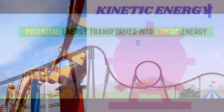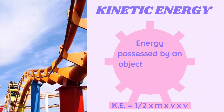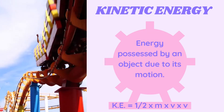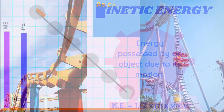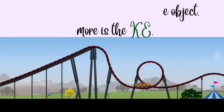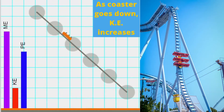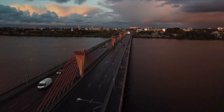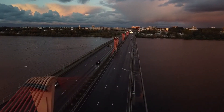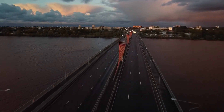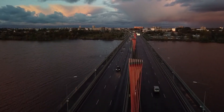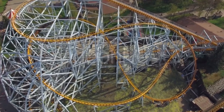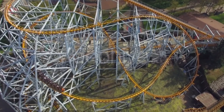That stored potential energy now turns into kinetic energy. Kinetic energy is the energy possessed by any body due to its motion, and is dependent on the mass and speed of the object. At the bottom of the first drop, the train reaches its fastest speed, and the more speed an object has, the more kinetic energy it possesses, because speed and kinetic energy are directly proportional to each other.